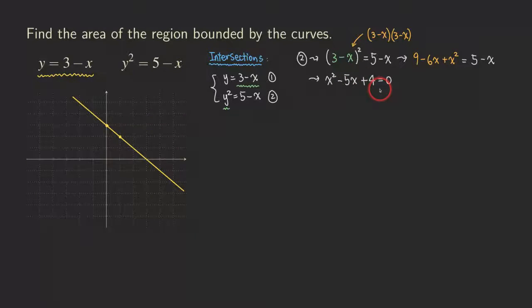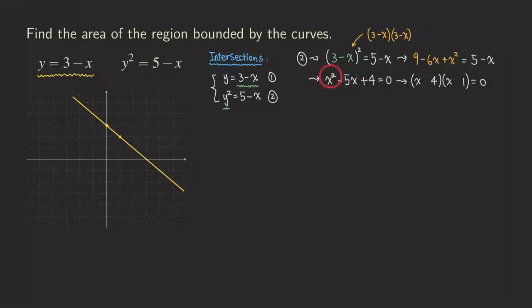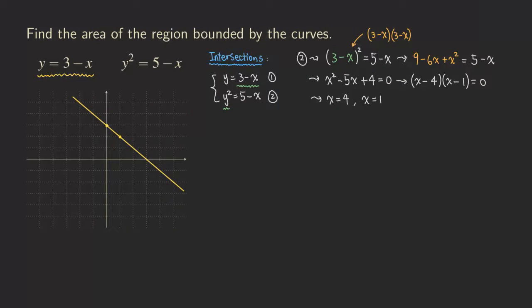We can use the quadratic formula or factor this quadratic if it's factorable — and it is. We factor as (x − 4)(x − 1): the factor 4 and 1 give us the constant 4, and both signs must be negative to get the middle term of negative 5x. Using the zero product property, we get x = 4 and x = 1 as the two x-values of intersection.